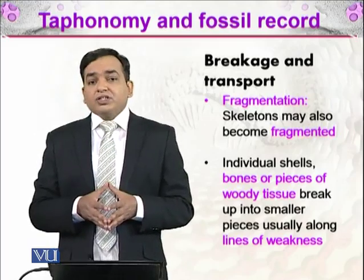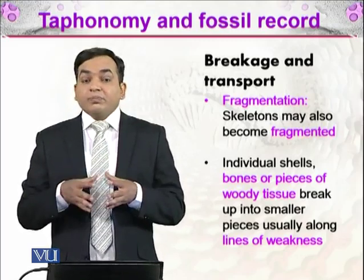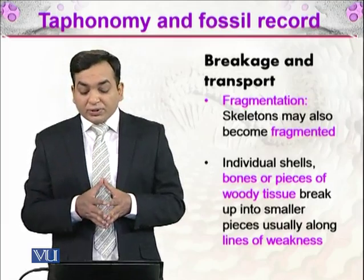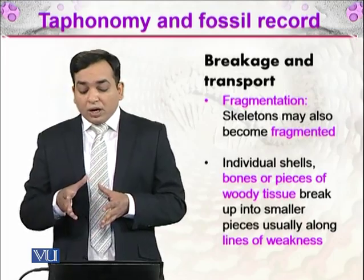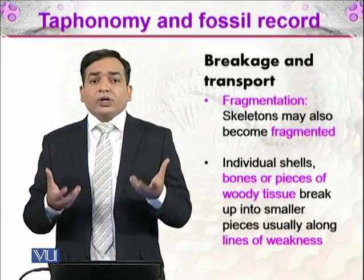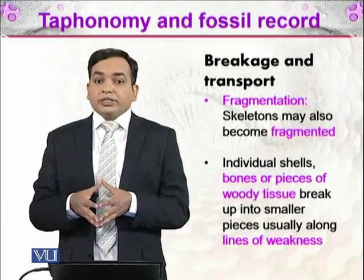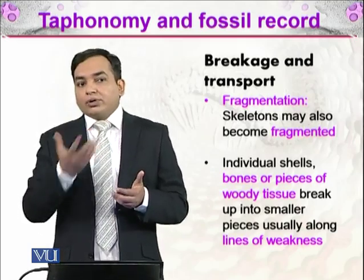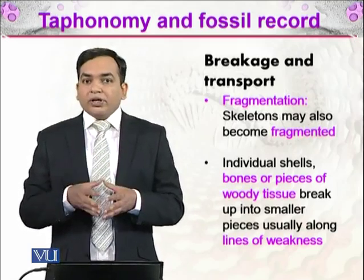The next process is fragmentation. Bones are not impervious to the forces of nature; there might be shearing forces resulting in bone damage. Individual shells, bones, or pieces of woody tissue break into smaller pieces, usually along lines of weakness. We know there are various joints connecting our bones — those are also weak points called fibrous joints. After decay has completed, bones are normally broken down along those joints.